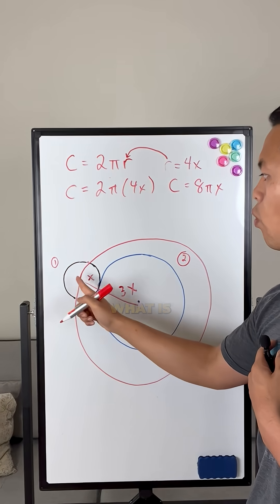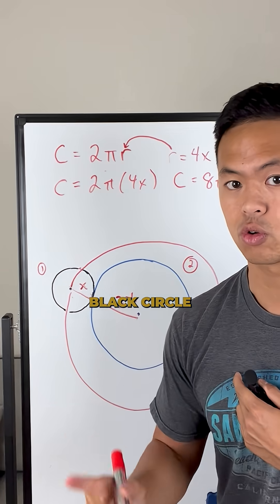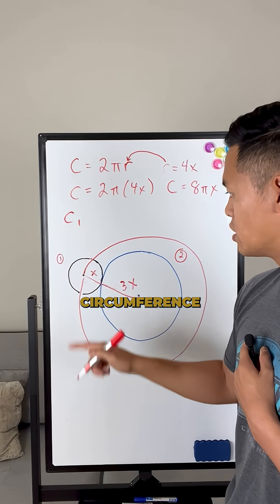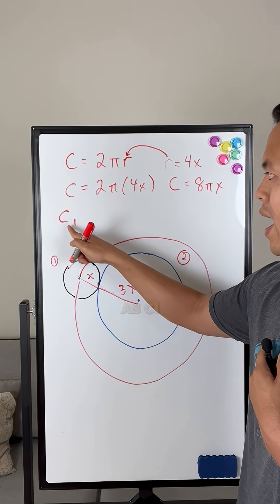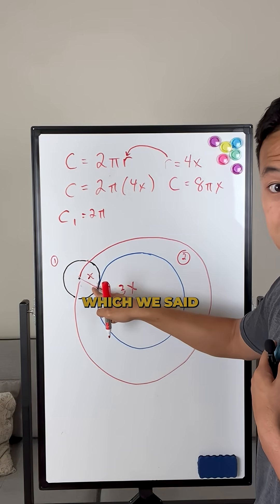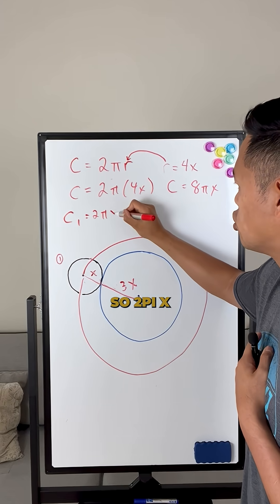All we need to do is find out what is the circumference of the black circle, so we can see how many times it fits into the eight pi X. We know that the circumference of the small circle, which we'll know as C one, is equal to two pi times the radius, which we said was X in the beginning. So two pi X.